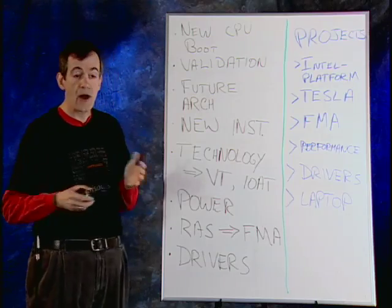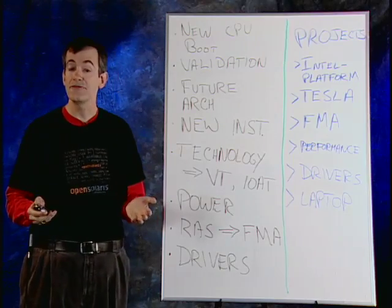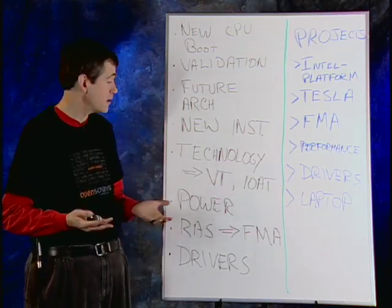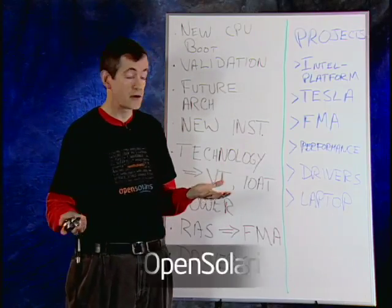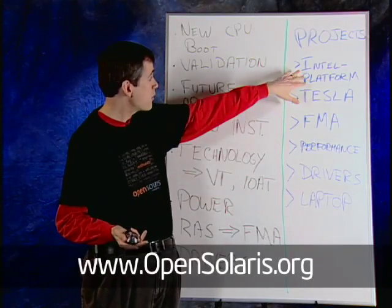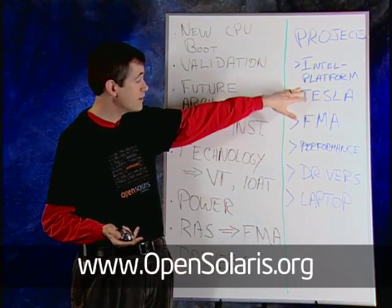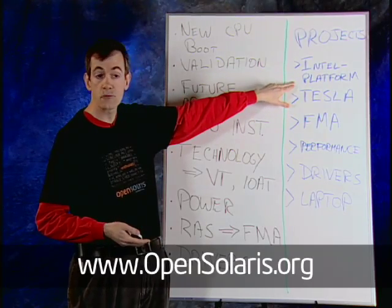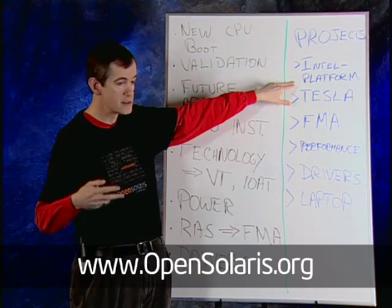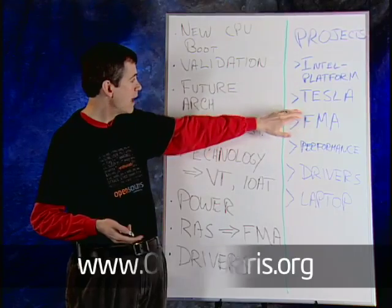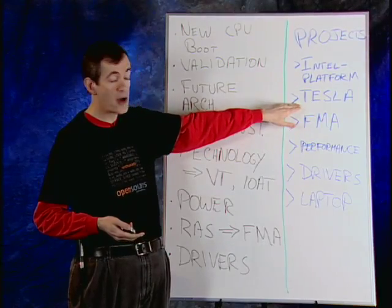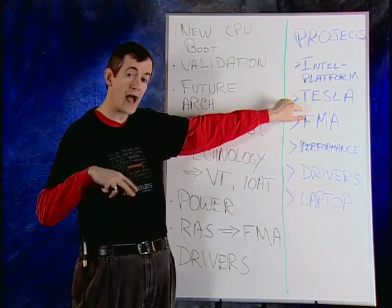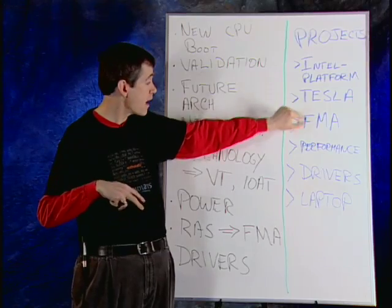So how do you take advantage of this as a developer? I'd encourage you to go to opensolaris.org, join and get involved with some of these particular projects. We've got the Intel Platform project where we're doing a lot of our new architecture work. The Tesla project is a great community project to improve power utilization in the operating system.